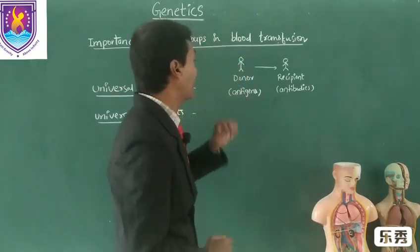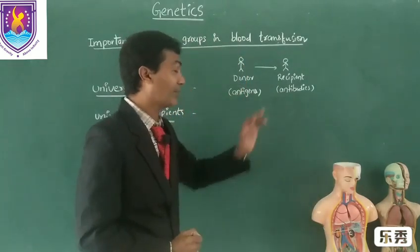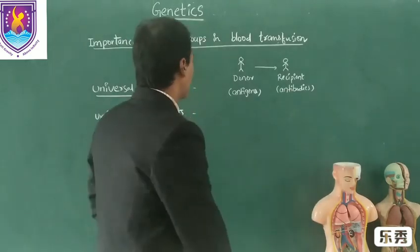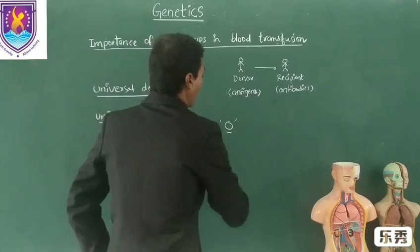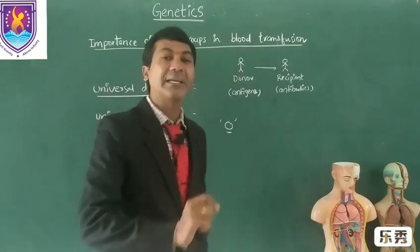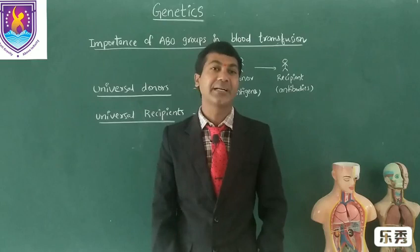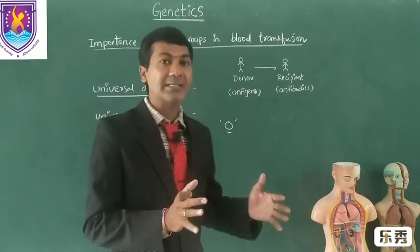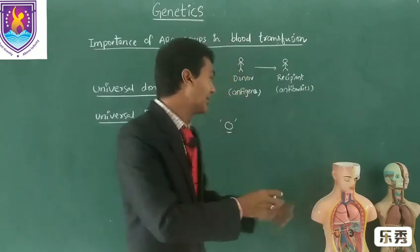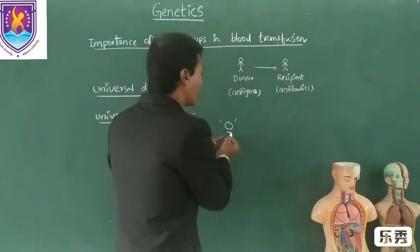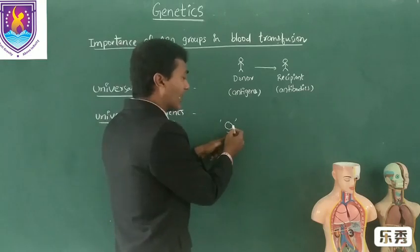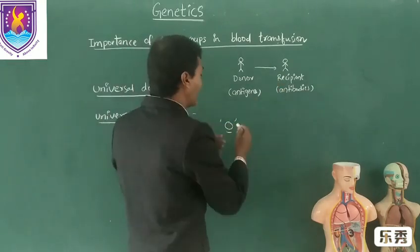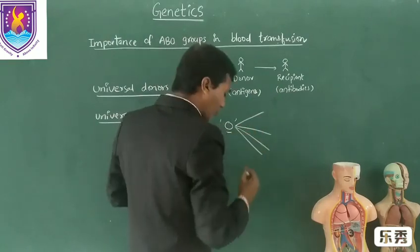It is very important what type of antigens are present in the donor and what type of antibodies are found in the recipient. Blood group O people are not having any type of antigens, as we have studied. The antigens are the cause of agglutination in the recipient. So blood group O people are not having any antigen to create agglutination in the recipient.